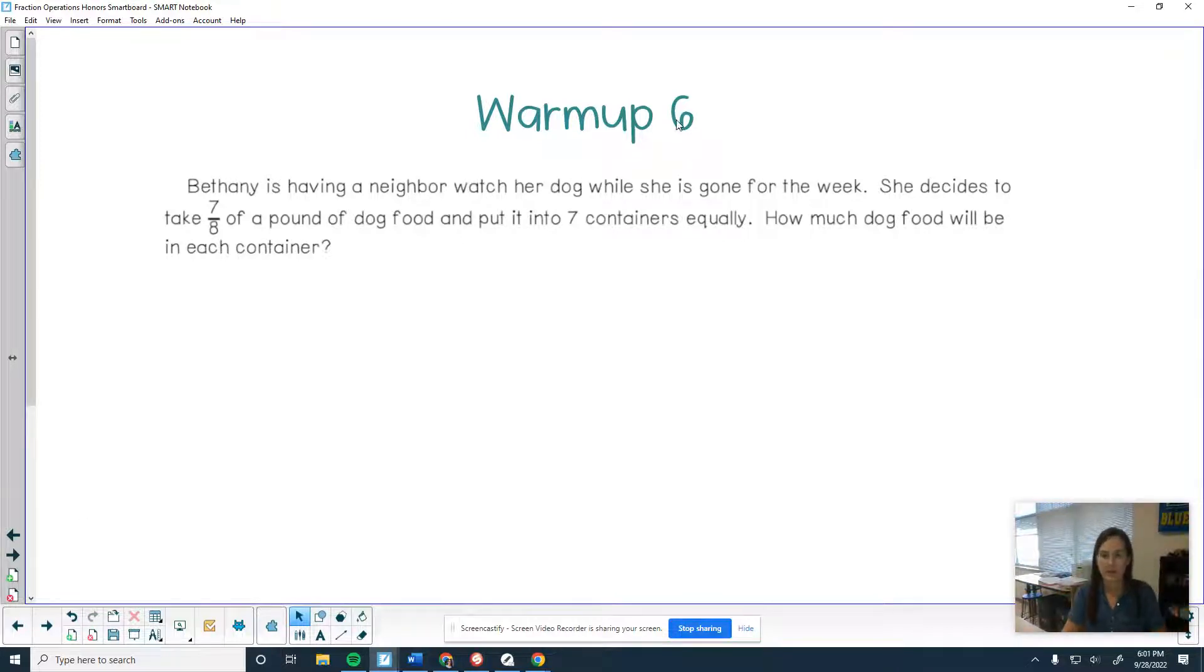Alright. Warm-up. I think this is seven. Warm-up number seven. Bethany is having a neighbor watch her dog while she's gone for the week. She decides to take 7/8 of a pound of dog food and put it into seven containers equally. How much dog food will be in each container? Alright. See if you can solve this. Pause it for a couple minutes and then we'll go over it.